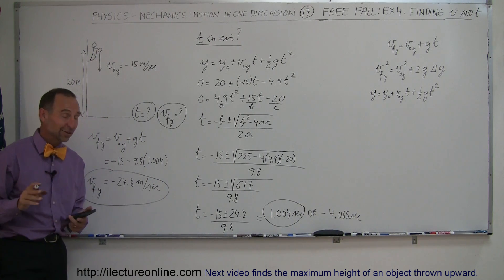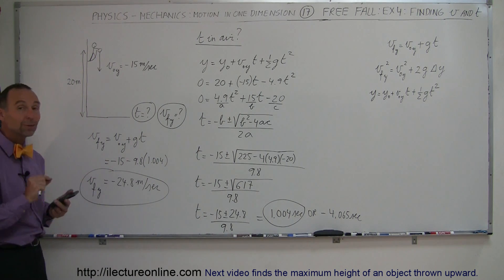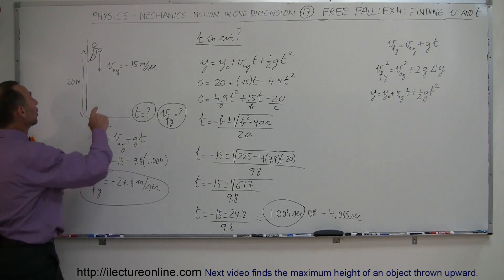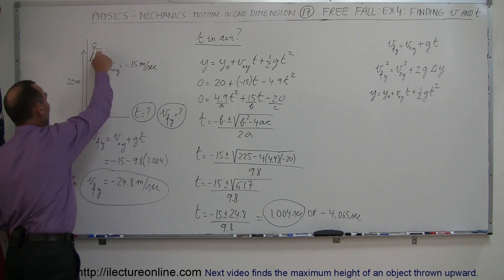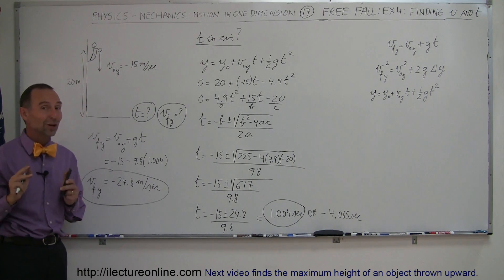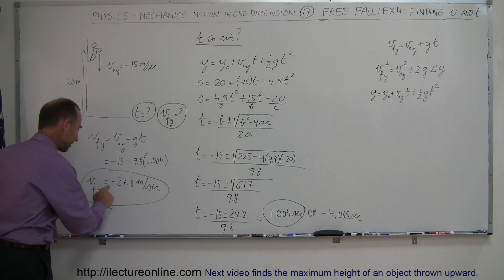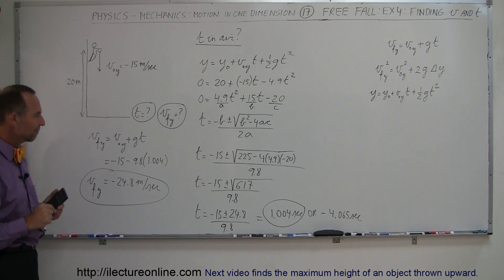Now, what's interesting here is, that's the exact same answer we got in the previous example. In the previous example, we threw the object upward at 15 meters per second, and in this example, we throw the object downward at 15 meters per second, and strangely enough, we get the exact same final answer for the velocity. Why would that be so?